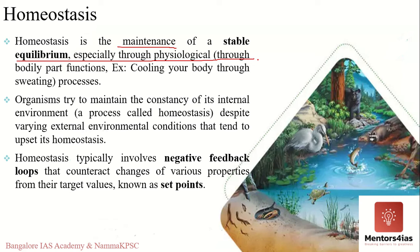The best example is the body's ability to maintain and regulate its temperature. Organisms try to maintain the constancy of their internal environment despite varying external environmental conditions that tend to upset their homeostasis. Another important thing to remember is that this also includes something known as negative feedback loops.